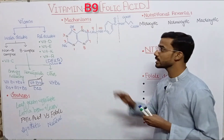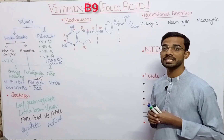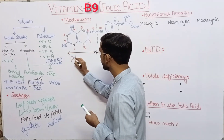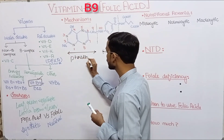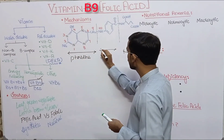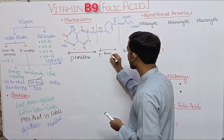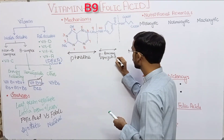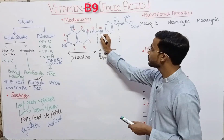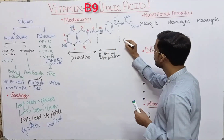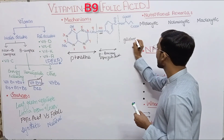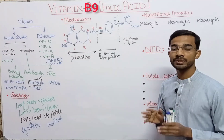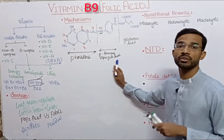Here you can see the structure of folic acid. It has basically three components. The first component is pteridine. The second component is para-amino benzoic acid — at the para position you will see the amino group. The last component is glutamic acid. So these are the three components of folic acid, or vitamin B9.